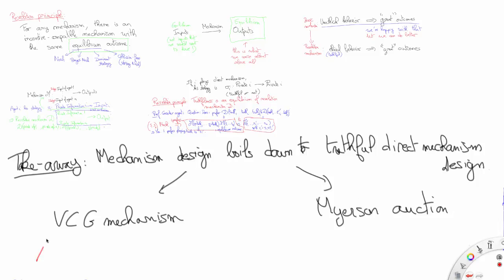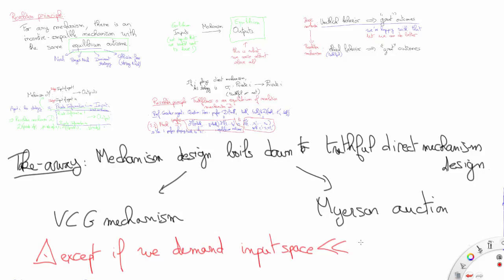To conclude, I do want to mention one case where the revelation principle does not really apply, and this is the case where the space of private information is too large to be used in practice. As an example, this may occur when dealing with high-order beliefs. If we demand the input space to be much smaller than the space of private information, then the revelation principle no longer applies straightforwardly. Evidently, that may be the reason why this is not so widely studied in the literature — the mechanism design problem in such a setting loses part of its nice structure.